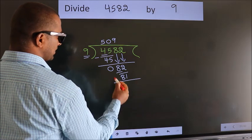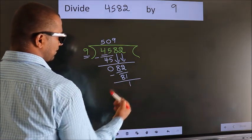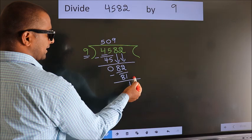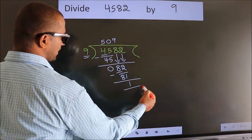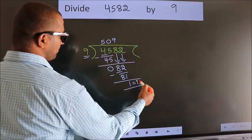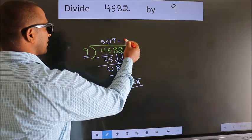Now we subtract. We get 1. No more numbers to bring down. So we stop here. This is our remainder. This is our quotient.